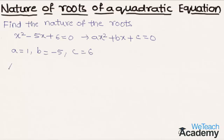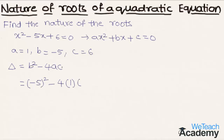Now let us find the value of delta. Delta equals b square minus 4ac. Substituting: minus 5 whole square minus 4 into 1 into 6, which gives 25 minus 24. So the value of delta is 1.